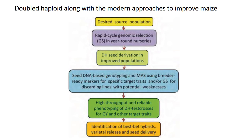From a desired source population we can subject it to genomic selection, developing breeding and training populations evaluated in year-around nurseries. DH seeds derived from improved GS populations are used for seed DNA-based genotyping, using breeder-ready markers for specific target traits and genomic selection for discarding lines with potential weaknesses. Then high-throughput phenotyping of double haploid test crosses for grain yield and other target traits, and finally identification of best hybrid varieties released and seed delivery.